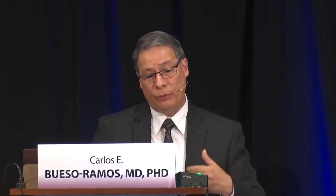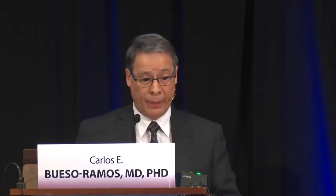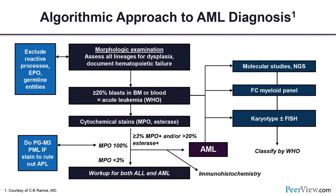The flow cytometry panel is being done simultaneously — a scatter is provided, and the next day flow cytometry is ready. As the case is being dictated, molecular studies receive a preliminary screen for actionable mutations. Don't forget to get a peripheral blood smear and review information related to the presence of EPO or colony-stimulating factors that might change your blast count.